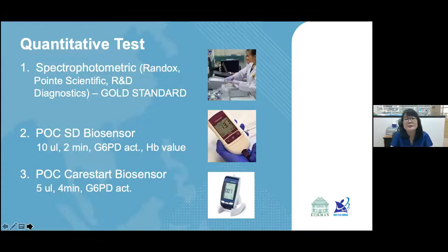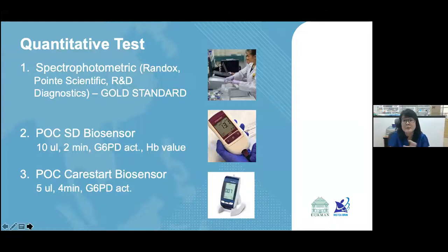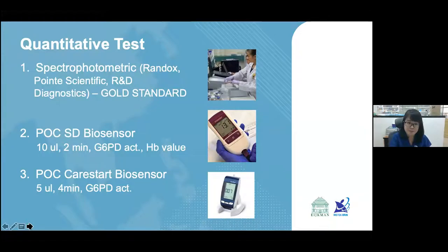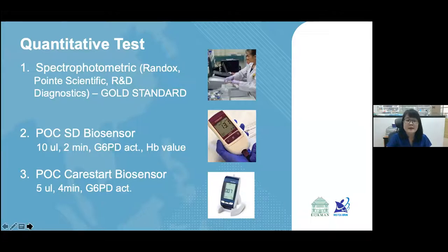For quantitative tests available on the market, spectrophotometric methods are considered the gold standard. They use the innate capacity of NADPH, the product of the G6PD enzyme reaction, which fluoresces at 340 nanometers, and measure the intensity of that fluorescence to calculate G6PD enzyme activity. Different brands include Randox, Point Scientific, and R&D Diagnostics. Trinity BioPak was widely used but has been discontinued and is being replaced by Point Scientific. Because spectrophotometry requires an actual lab and skilled technicians, it cannot be brought to the field.